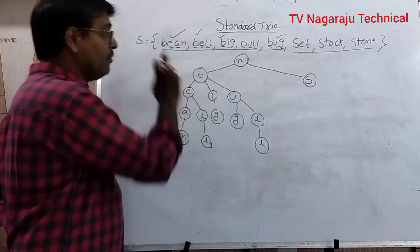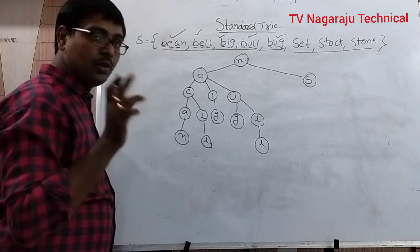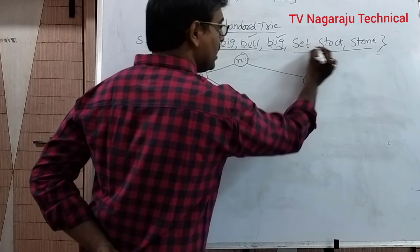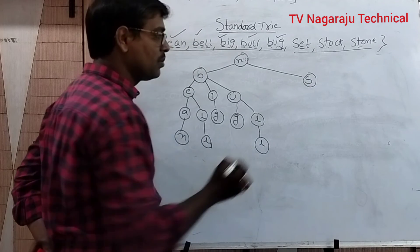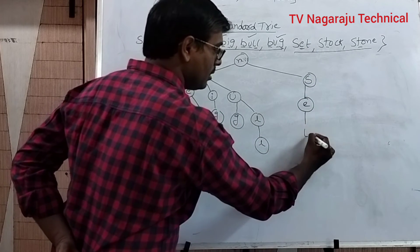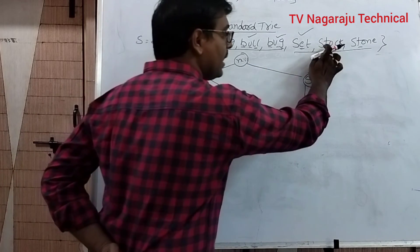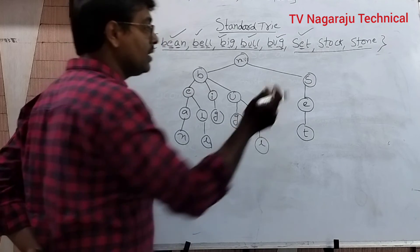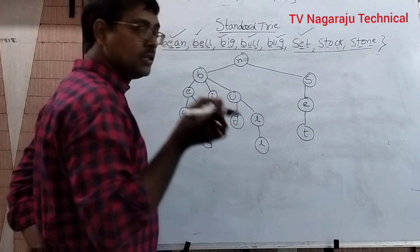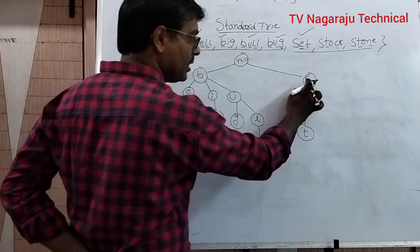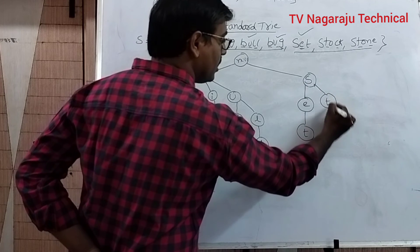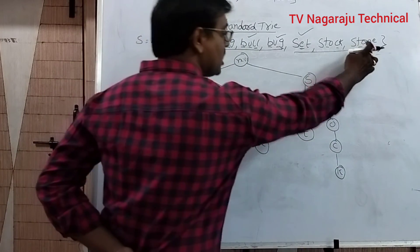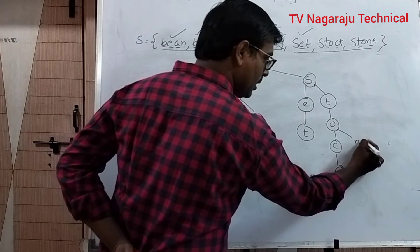Now we move to the strings starting with S: Set, Star, Stone. Remember, even though they are not given in alphabetical order, you have to arrange them in alphabetical order. All begin with S. The next characters: E is smaller than T, so Set (S-E-T) is constructed first. Then ST is common to Star and Stone. The third characters O match for both. The fourth characters are C and N — C is smaller, so Stock (S-T-O-C-K) is constructed, and then Stone shares S-T-O, so we add N-E to complete Stone.